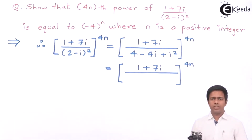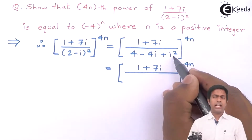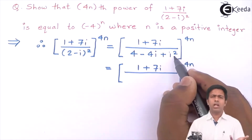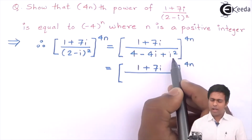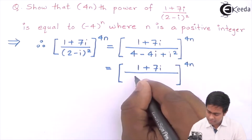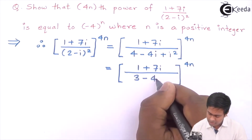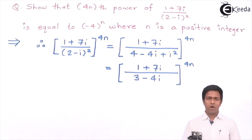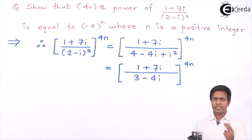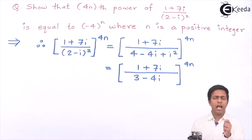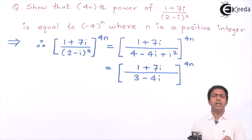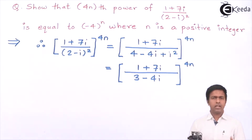Since i² = -1, the denominator becomes 4 - 1 - 4i, which gives us 3 - 4i. Now we have a complex number in the denominator. To remove it, we will use rationalization — multiplying numerator and denominator by the conjugate of the denominator.